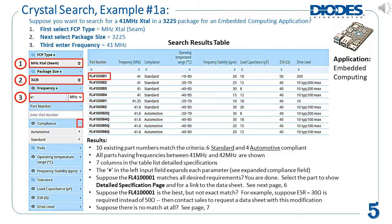All parts having frequencies between 41 megahertz and 42 megahertz are shown. Seven columns in the table list detailed specifications. The plus in the left input field expands each parameter to show its details — see the expanded compliance field, for example. Suppose the FL4100001 matches all desired requirements; then you may be done. Click on the part to show detailed specifications and for a link to the datasheet. Suppose the FL4100001 is the best but not an exact match — for example, suppose you require ESR equals 30 ohms instead of 50 ohms. Then contact sales to request a datasheet having this modification. Suppose there is no match at all — we'll cover that on page 7.